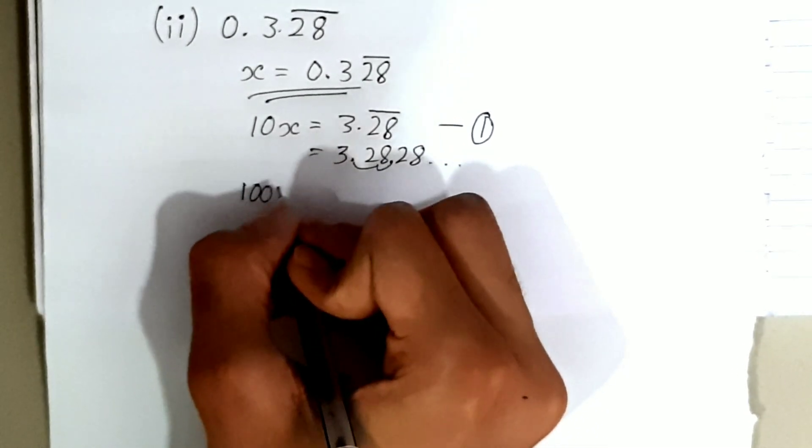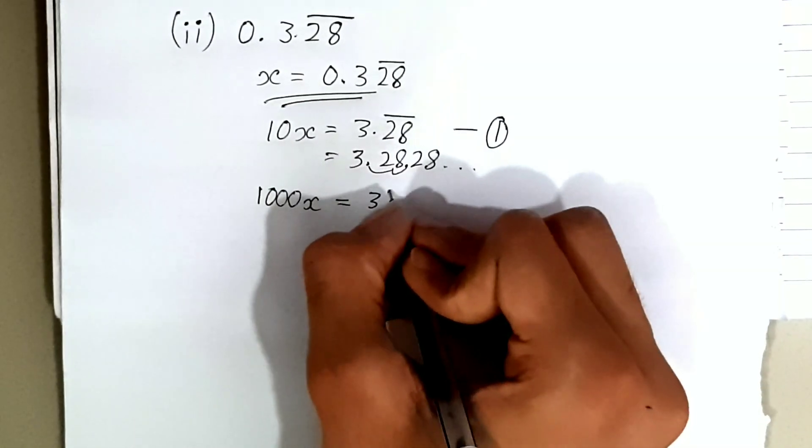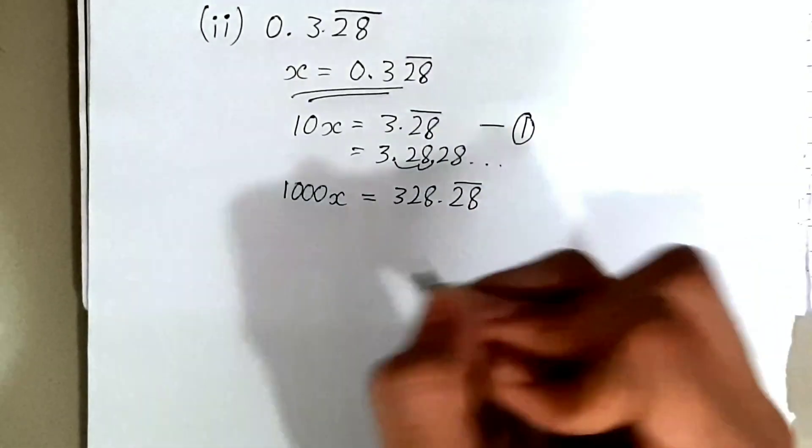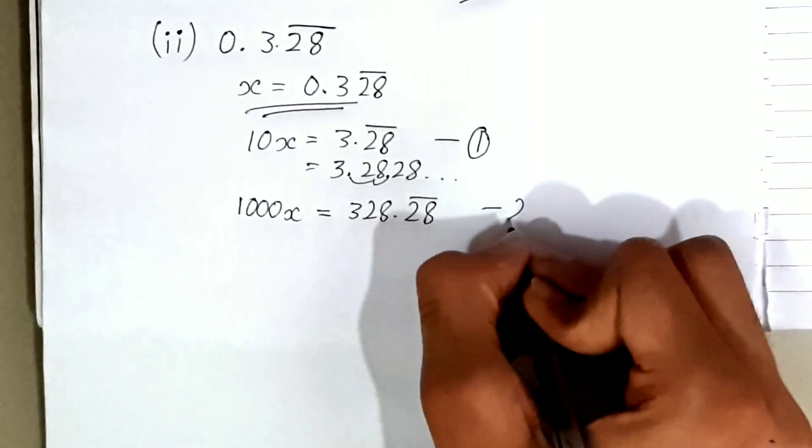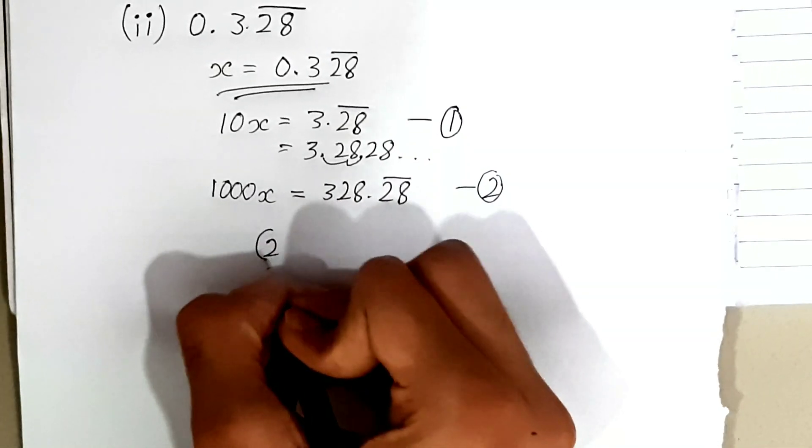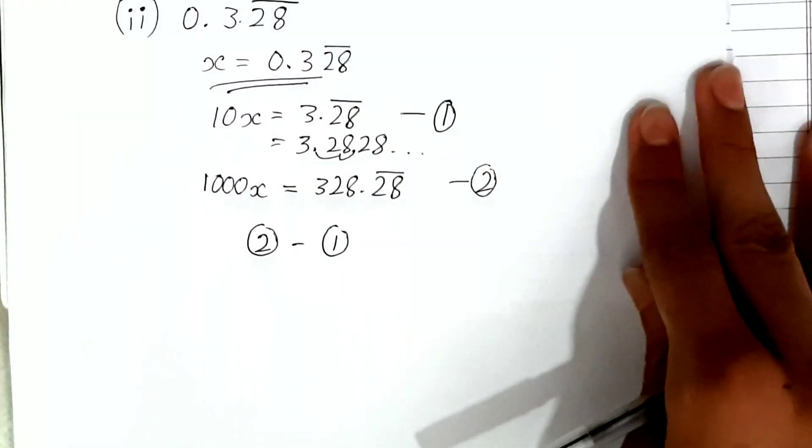This is our equation 2. We'll subtract equation 1 from equation 2, so equation 2 minus equation 1: 1000x minus 10x.